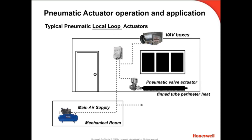This training covers pneumatic actuator local loop applications, such as this perimeter fin tube heating valve. Many pneumatic actuators are also found on other unitary equipment, such as fan coils, VAV boxes, unit ventilators, and rooftop units.